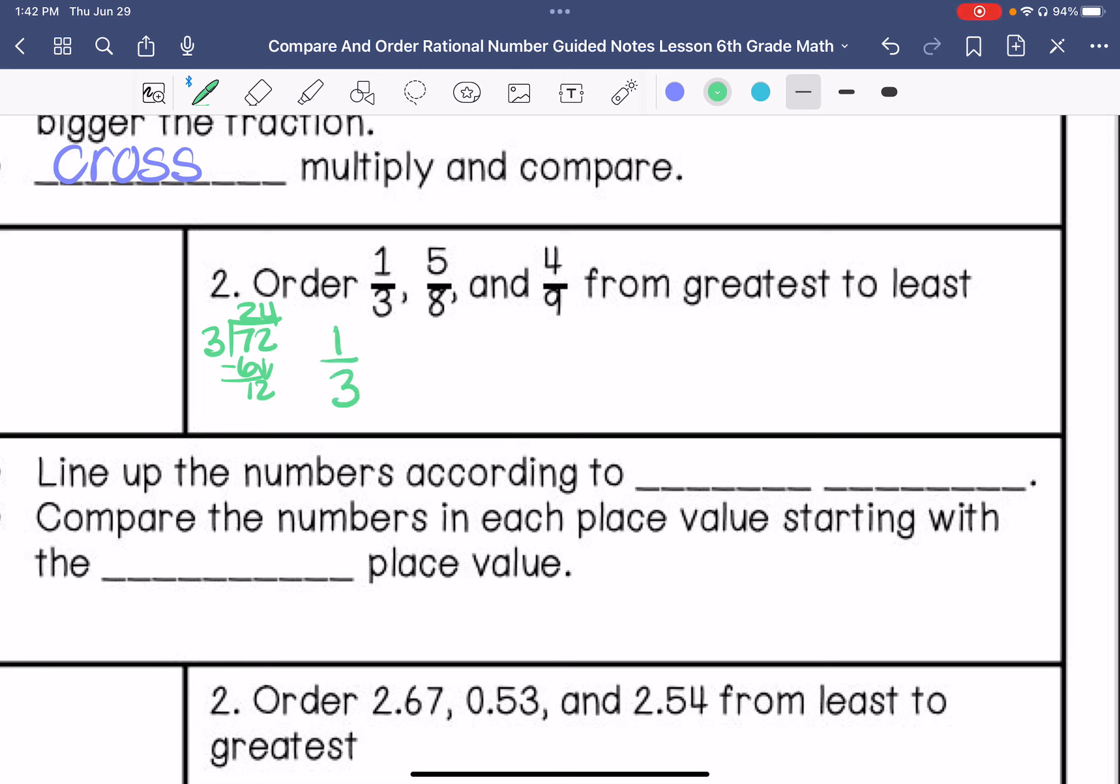So we have one-third times twenty-four times twenty-four, that would be twenty-four seventy-two. Five-eighths times nine times nine, that would be forty-five over seventy-two. And then we have four-ninths, which is times eight times eight, and that would be thirty-two over seventy-two. So my greatest is five-eighths, then four-ninths, and then one-third.